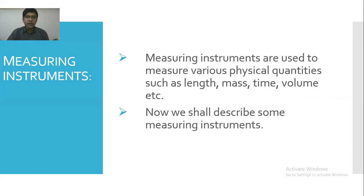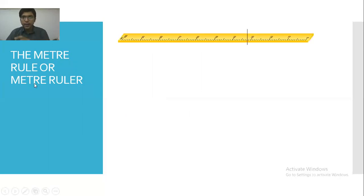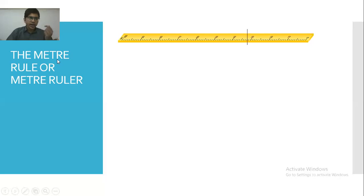Now we shall describe some of the measuring instruments one by one. The first measuring instrument is called the meter rule or meter ruler. Here is the diagram — this is a simple scale of one hundred centimeters. You have seen it during studies or in laboratories.